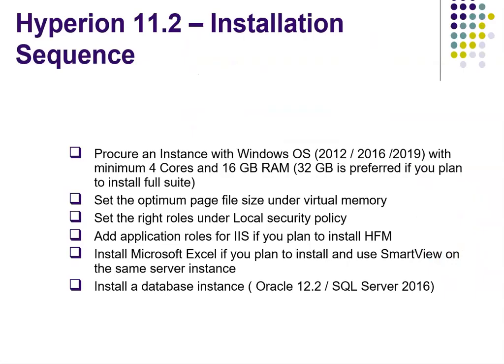Before we get onto the system, let me walk you through the steps. The installation sequence would be: first, we need to procure an instance which must have at least four cores and 16 GB RAM. I would prefer 32 GB if planning to install the full suite of Oracle Hyperion EPM products. The supported operating system at this moment is Windows only — 2012, 2016, and 2019. Today I'm going to show you how to install on a 2019 operating system.